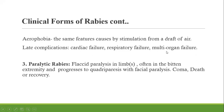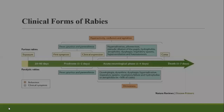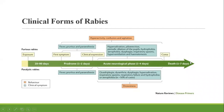Paralytic rabies accounts for about 20% of cases and presents with paralysis, especially from the area that was bitten. This form can also lead to coma and death, with recovery occurring only in very rare cases. Once signs and symptoms appear, death is almost certain, occurring within less than a week.